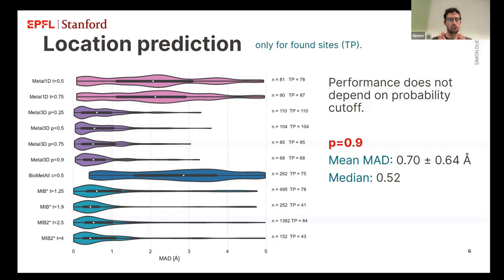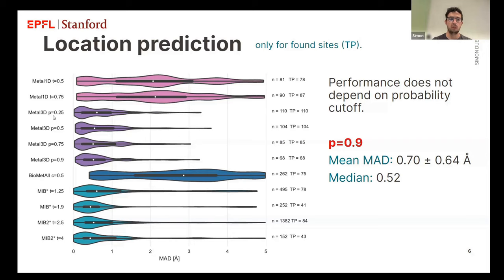We also looked at spatial precision of predictions — specifically, how far the predicted location is from the expected location. Geometric predictors like Biometal and Metal1D are about 2–3 Å away on average. Our deep learning model and the template-based model are usually around 0.5–0.6 Å. The cool thing is that even if you decrease the probability cutoff, the predictions remain spatially precise. If the model is less confident, it doesn't mean the prediction is geometrically worse — just that there may be other factors at play.